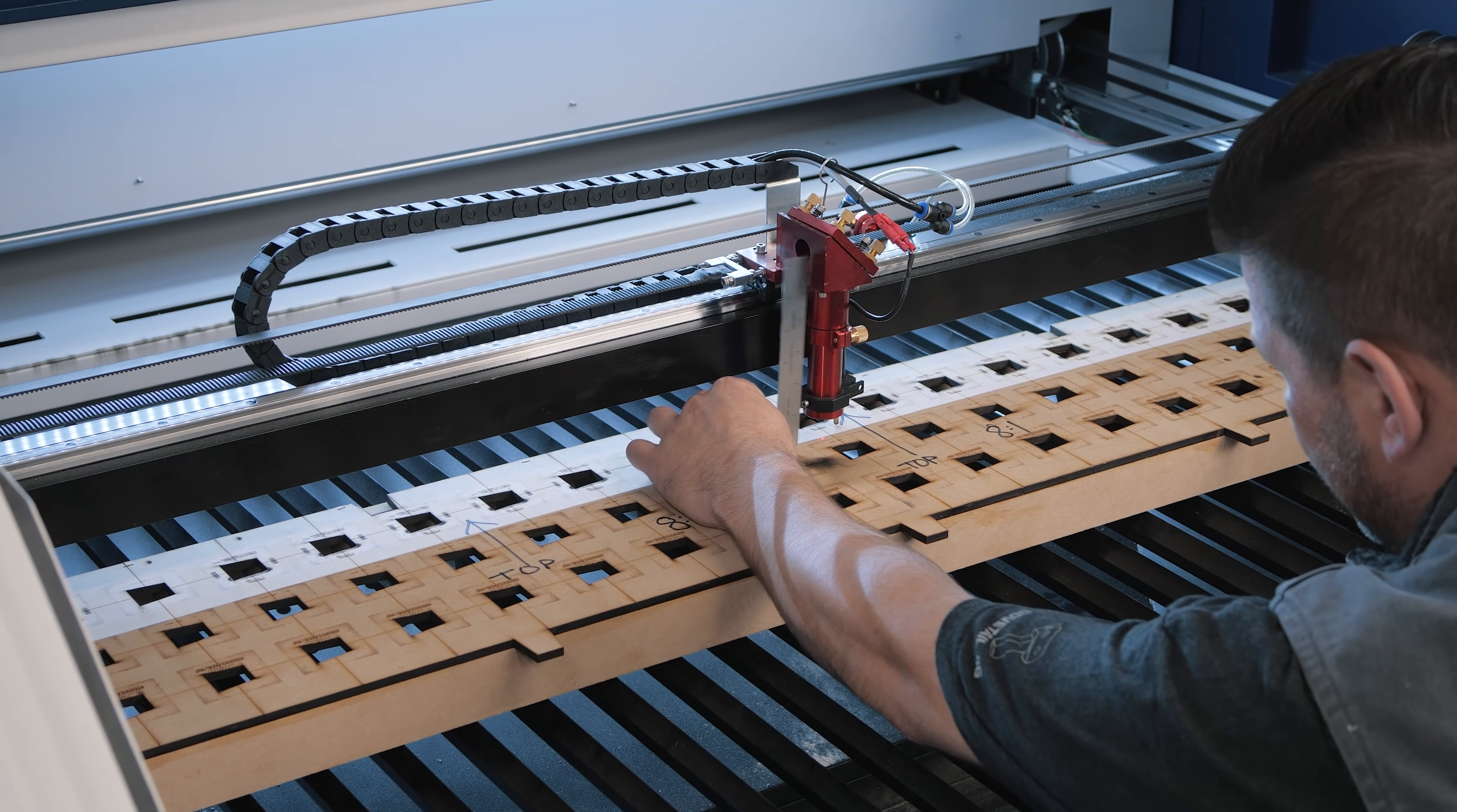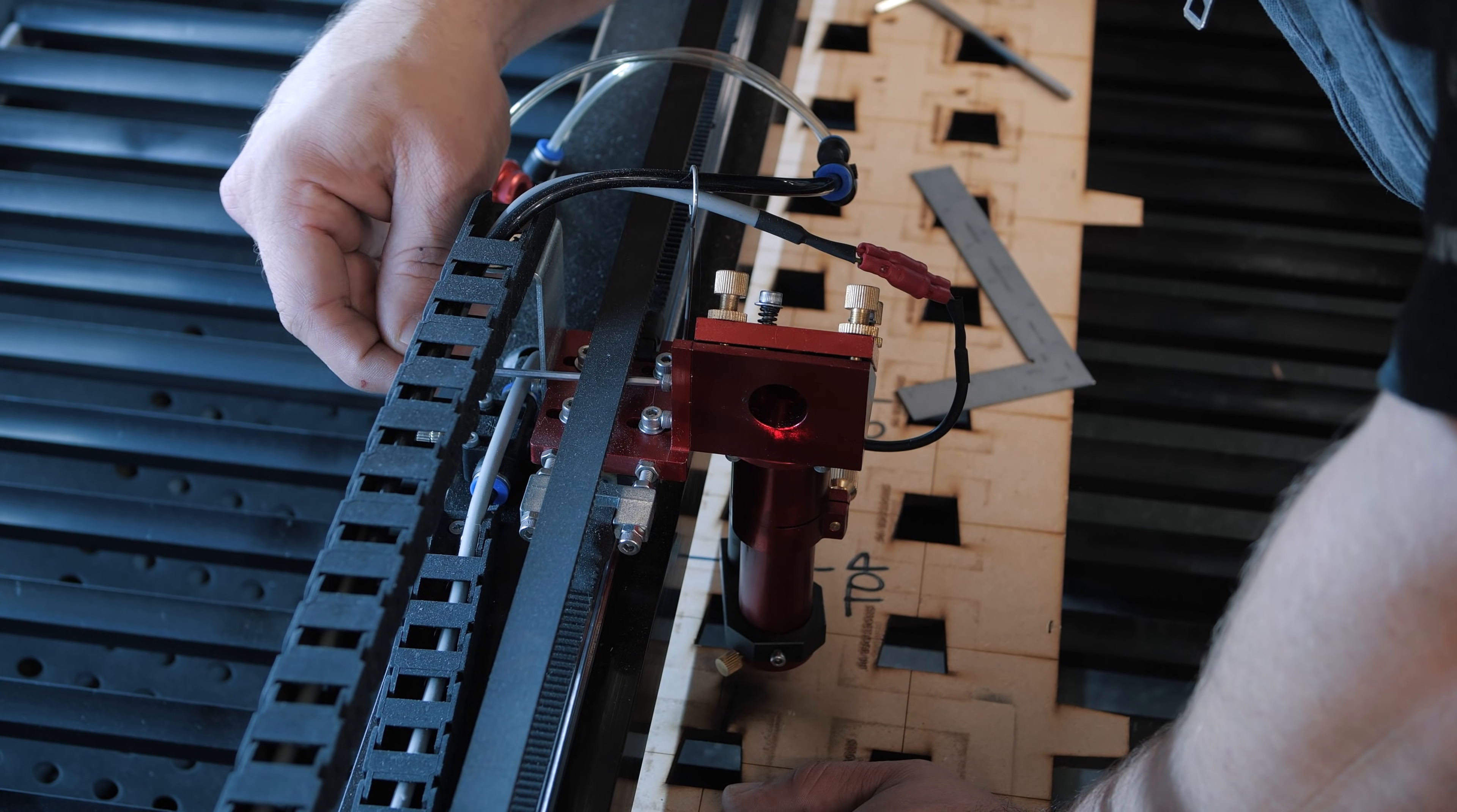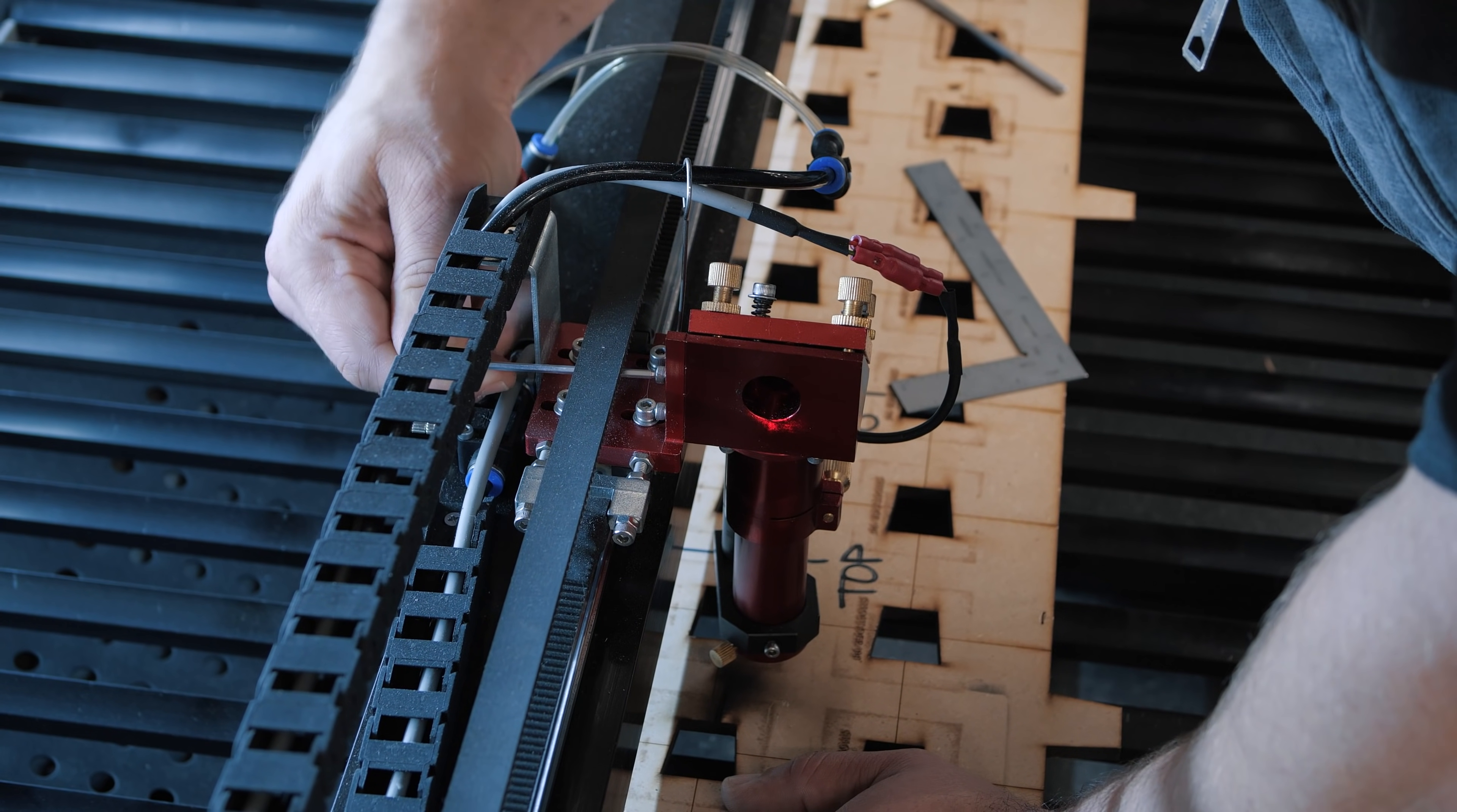I'm going to loosen this screw back here. It's really hard to get to these but that's okay—you can do it with a pair of pliers if you need to. It's pretty easy to move this laser head once you loosen one of the screws. You want to loosen it and then crank it back down, then we just adjust it until there's no light between that square and the nozzle.